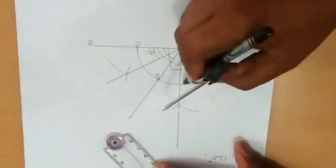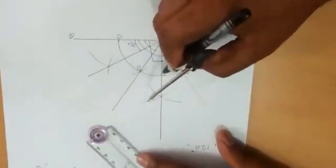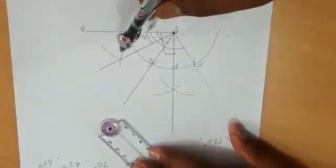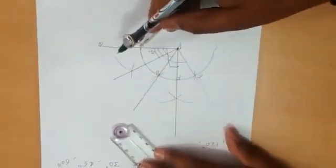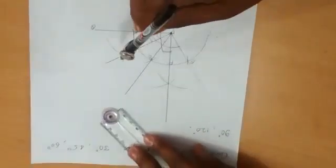Let this point is F. If we bisect angle FPC, we get 45 degree angle.